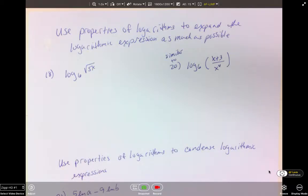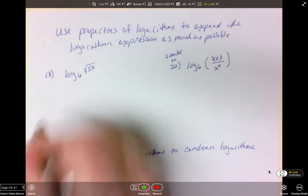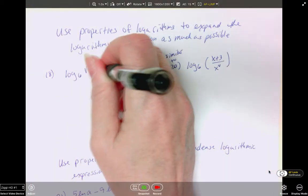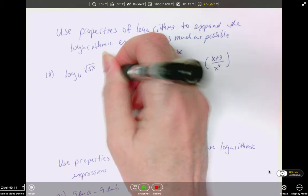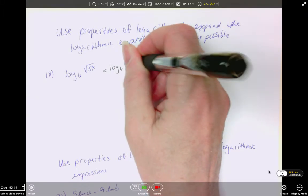So we are expanding log base 6 square root of 5x. The first thing that we want to do is write our square root as an exponent. So this is going to equal log base 6 of 5x to the 1/2.